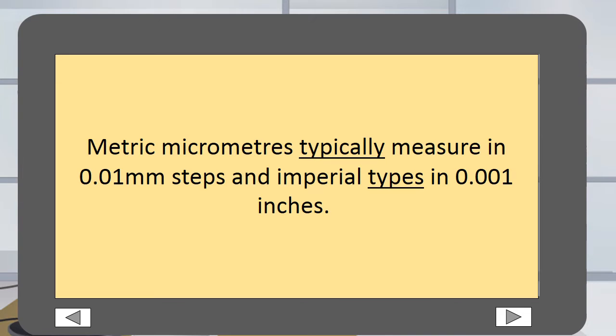Metric micrometers typically measure in 0.01 mm steps and imperial types in 0.001 inches.